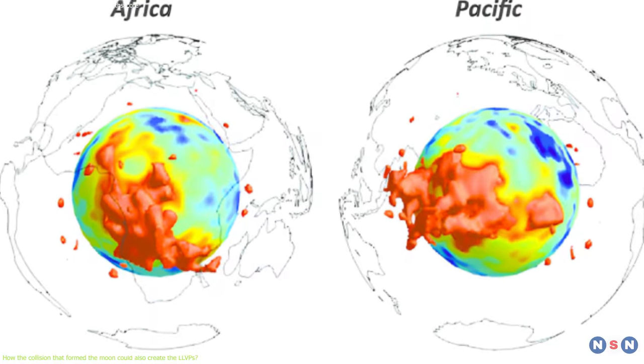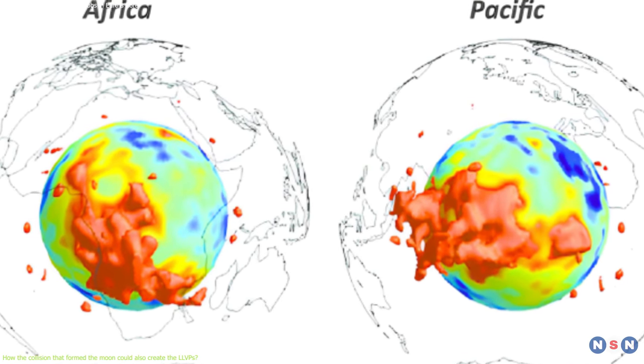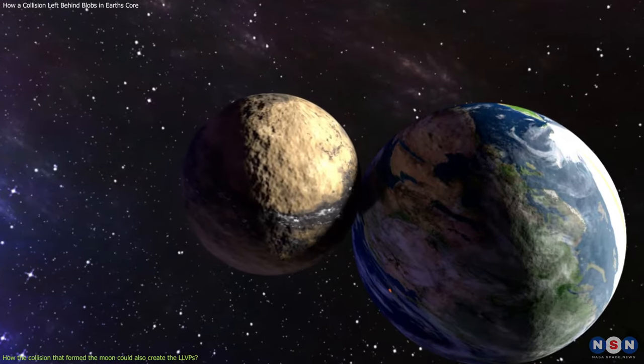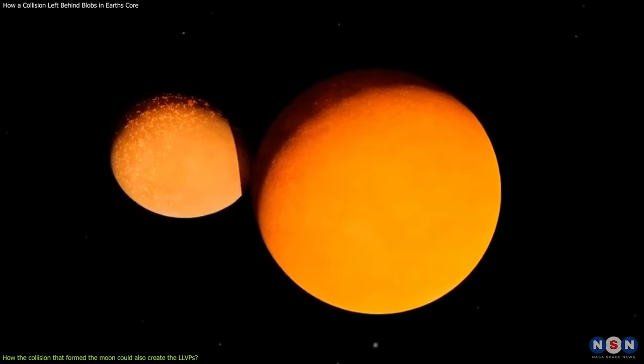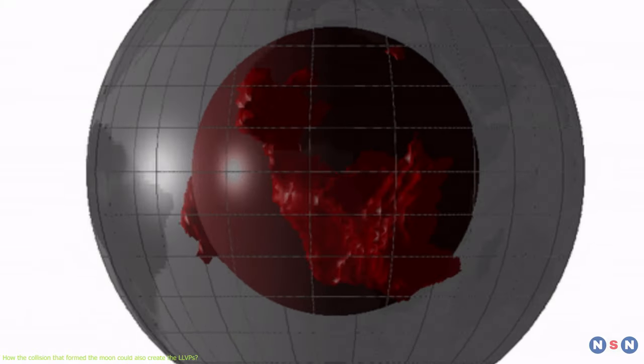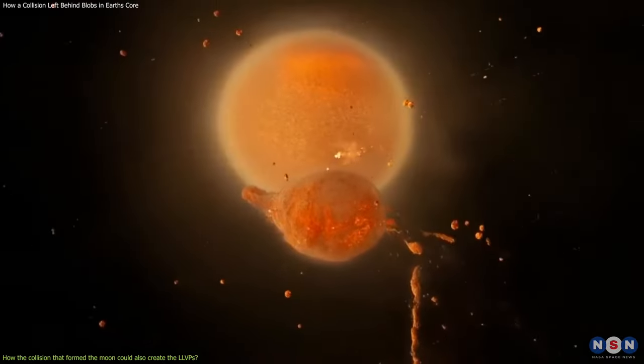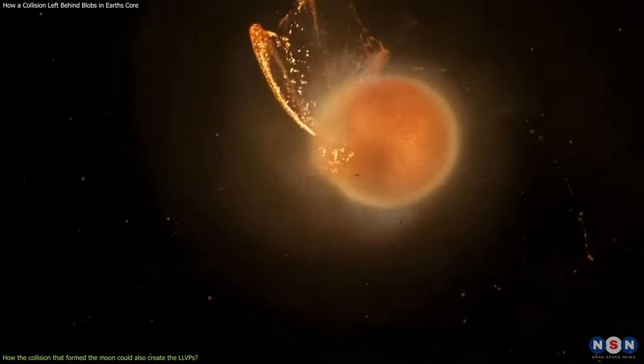The theory also explains why the LLVPs are located beneath Africa and the Pacific Ocean, because these are the regions where the material from Theia would have landed, according to the angle and direction of the impact. It also explains why the LLVPs have a blob-like shape, because the material from Theia would have deformed and stretched as it sank through the mantle.